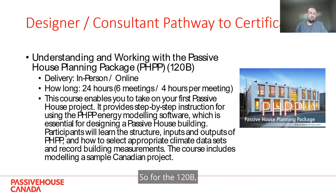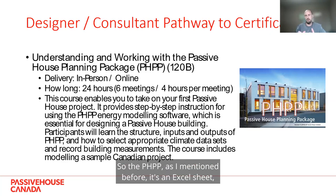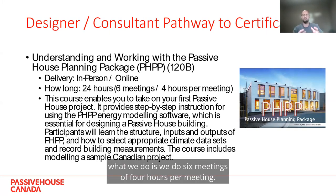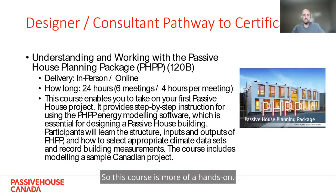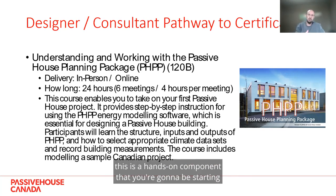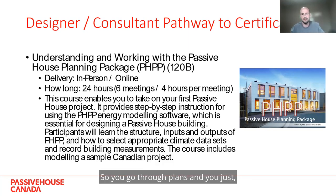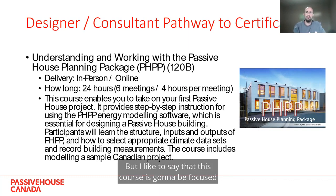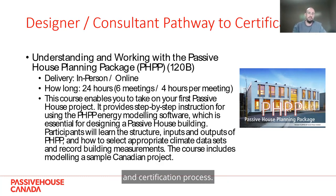For the 120B course — the PHPP — this is a very powerful Excel sheet where you do all the inputs for energy modeling. This course can be delivered in person or online; online it's six meetings of four hours per meeting. This course is more hands-on. We highly recommend taking the 128A first because of all the Passive House principles you'll need. In this course you start modeling a Passive House from beginning to end — going through plans with instructors guiding you throughout the whole process. It's focused for people who are actually going to take on projects and the certification process.